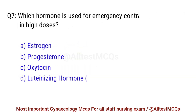Question No. 7. Which hormone is used for emergency contraception in high doses? Right option is B. Progesterone.